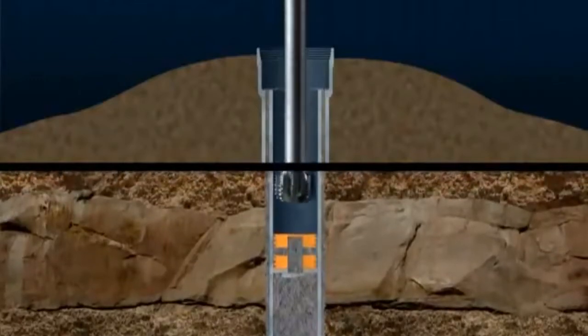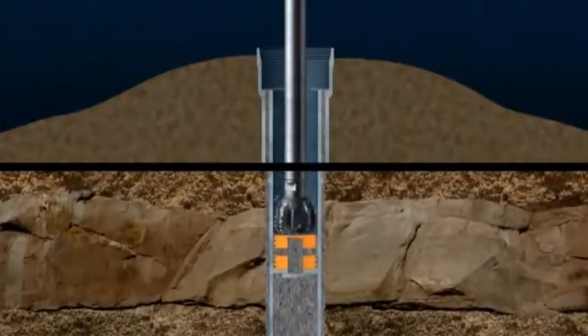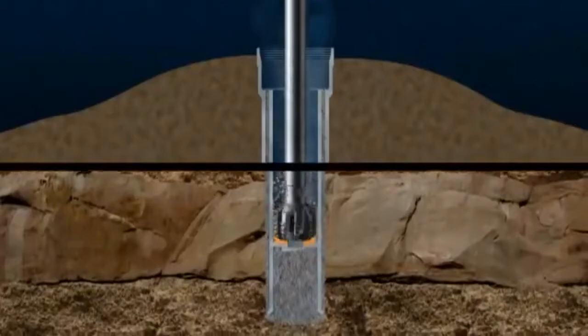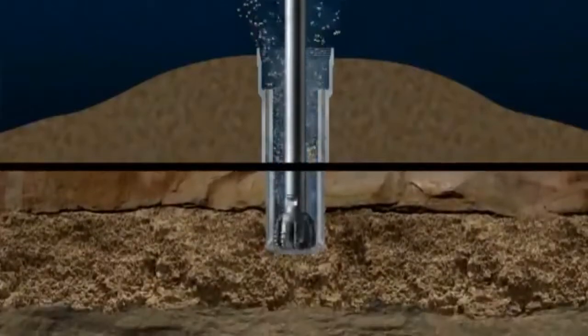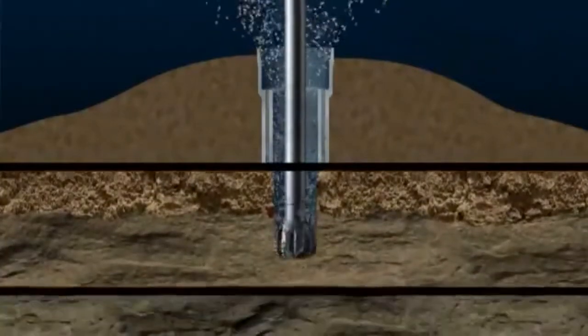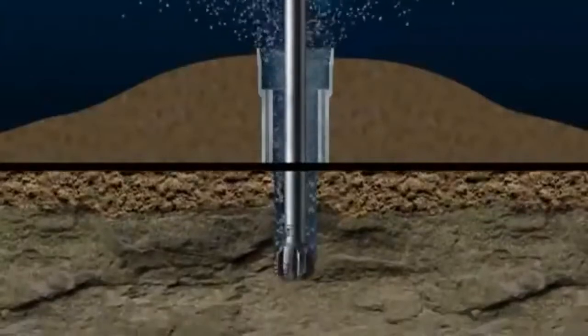Drilling continues with a smaller diameter bit, penetrating the cement plugs and float collar and into fresh rock. After a suitable depth has been drilled, the drill string is removed.